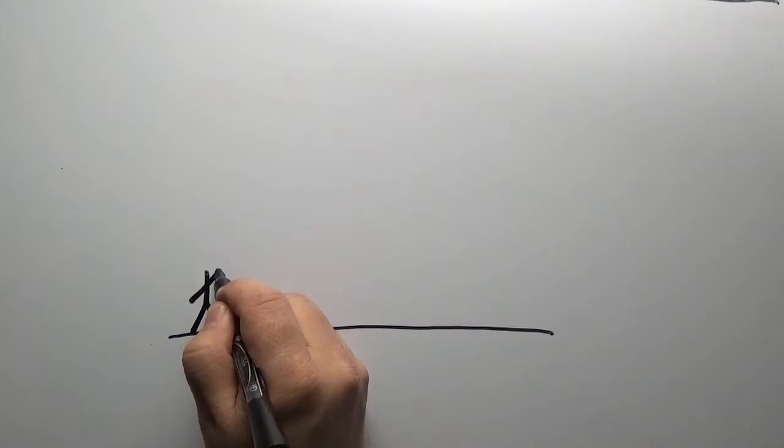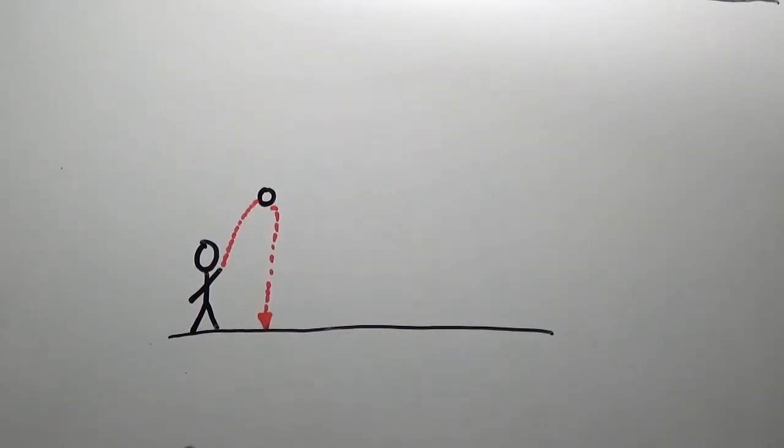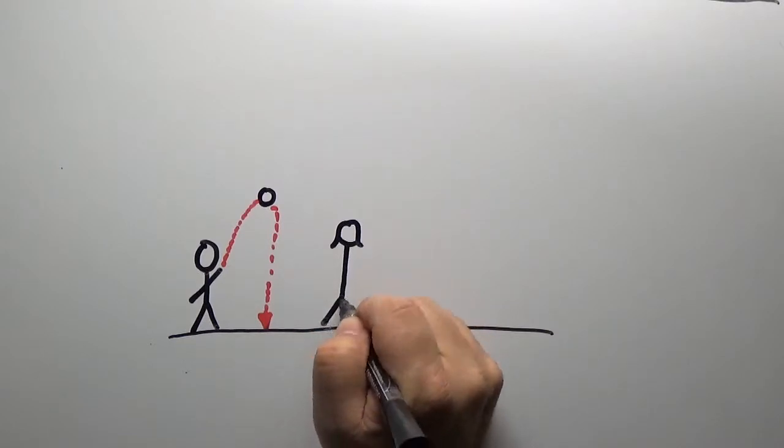What happens if I throw a ball up in the air? It flies up, slows down, turns around, and falls back to the ground.